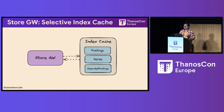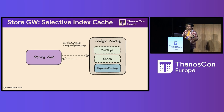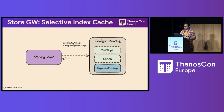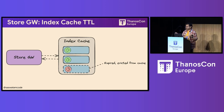Moving on to the store gateway, we have a new feature to enable selective index caching. In Thanos right now, we cache three things: the series, the postings, and we also cache expanded postings now. What you can do is use the enabled items configuration option and choose to only cache certain items in the Thanos index cache to optimize for situations better suited to your needs. For example, if you have a memory constrained environment, you can choose to only cache expanded postings instead of everything. We also added an option to allow specifying time to lives or TTLs for items within remote caches like Redis and Memcached, so that postings, series, and expanded postings can be stored for longer to benefit repetitive or longer-ranged queries.